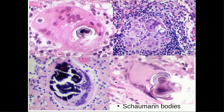Here we can see Schaumann bodies, which are oxalate calcium crystals. Here is one multi-nucleated giant cell with multiple nuclei, and these dark violet concentric lamellar structures are Schaumann bodies — visible here, here, and here.